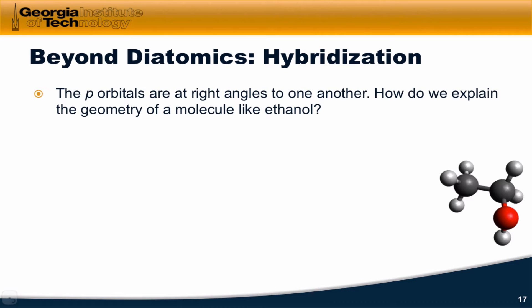In a lot of molecules, we don't see geometries that would be indicated based on the shapes of the P orbitals. In a molecule like ethanol, which consists of carbon, hydrogen, and oxygen — carbon and oxygen are second row elements, and so the P orbitals are the valence orbitals. The P orbitals are aligned along the x, y, and z axes at right angles to one another. So if we're using the atomic orbitals to overlap to form bonds, we would expect bond angles of either 180 or 90 degrees. But when we actually look at ethanol and optimize its geometry quantum mechanically, we get a tetrahedral structure at every atom — bond angles closer to 110 degrees rather than 90 or 180.